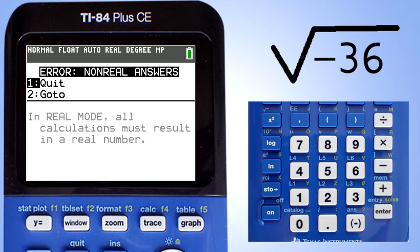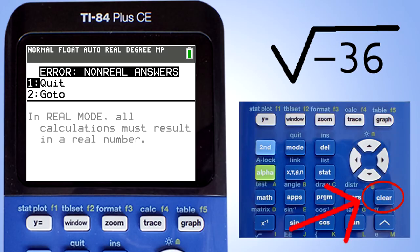Because this type of radical involves imaginary numbers. Imaginary numbers is an advanced topic in algebra. If you are going to work with imaginary numbers you need to change the mode settings in the calculator. Press the clear button to escape this error message.